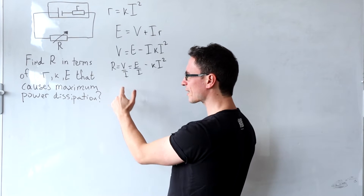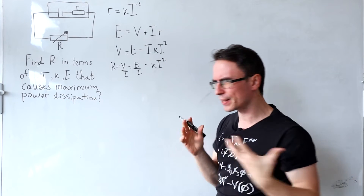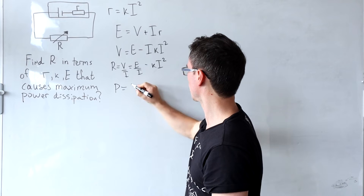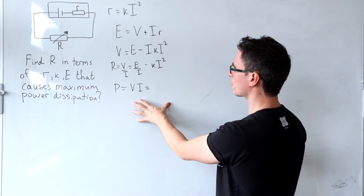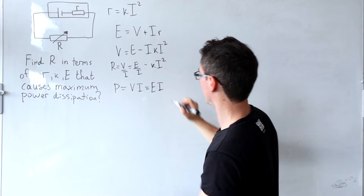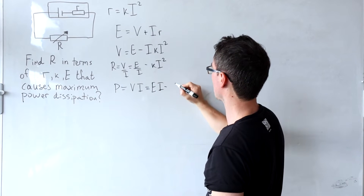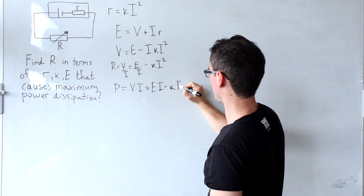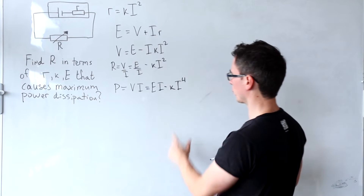The question is asking us for the value of R so that maximum power is dissipated. Power is just equal to the voltage divided by the current, which is just going to be a function. It will just be equal to EI minus K times I to the power of 4.